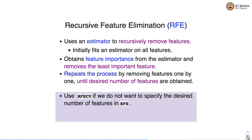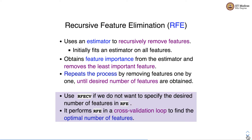If you do not want to specify the desired number of features, we can use another method called RFECV, which is Recursive Feature Elimination with cross-validation. RFECV performs RFE in a cross-validation loop to find out the optimal number of features, thus freeing us from specifying the desired number of features as in RFE.